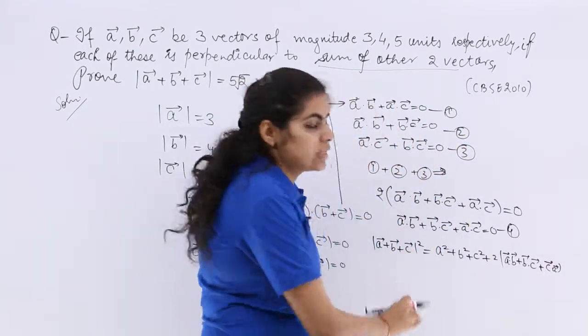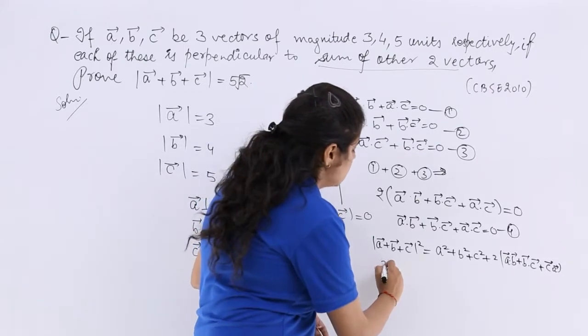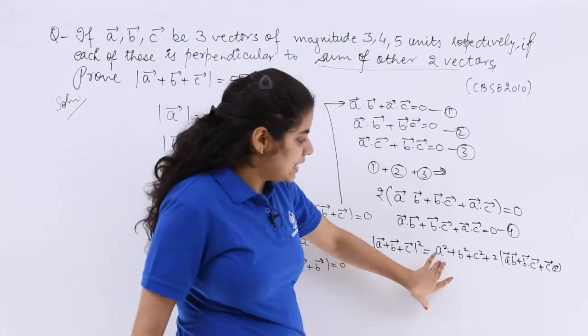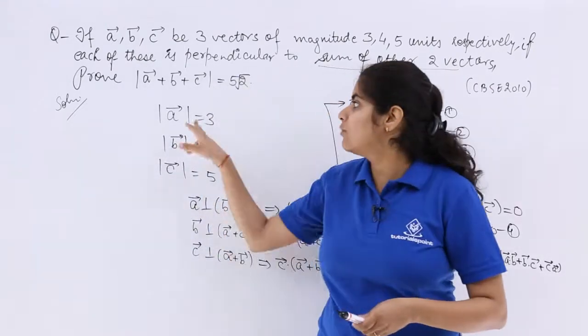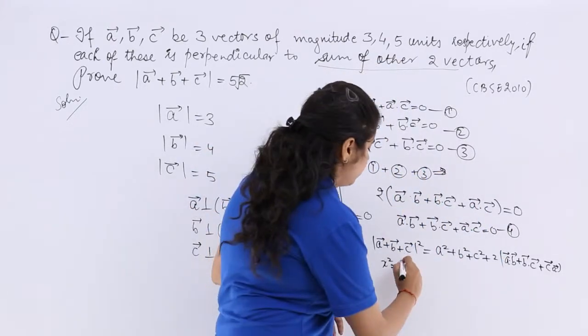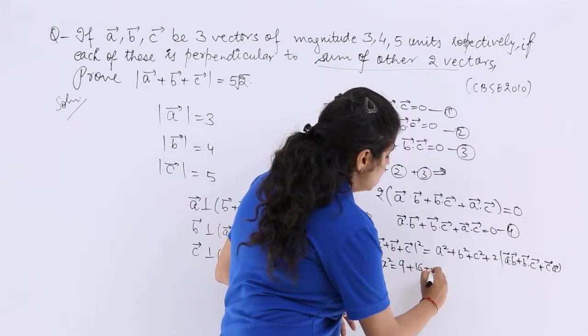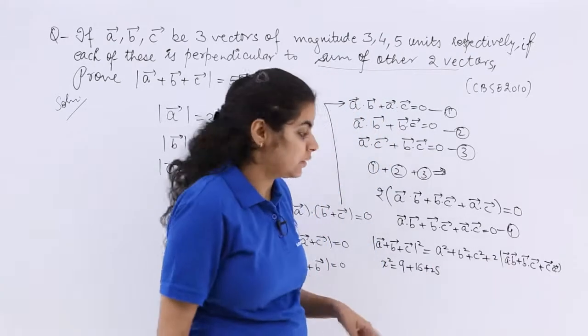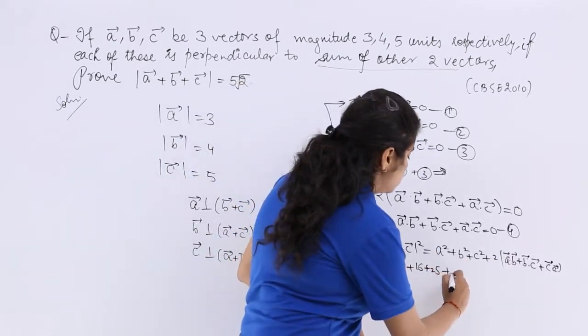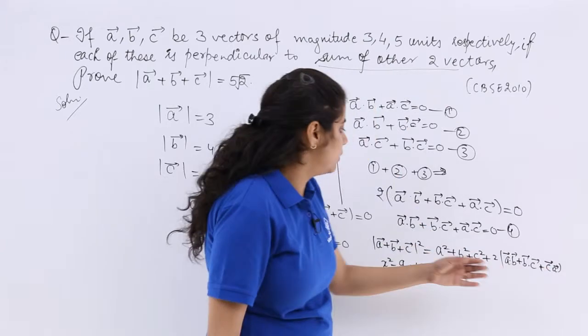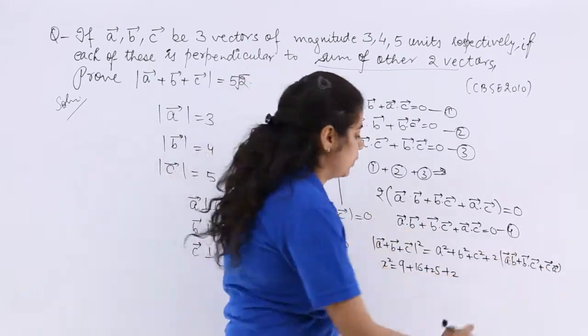Now this is required. Let me write it as X square probably. A square means mod of A square which is 9. B square is 16. C square is 25. Twice times this whole thing in bracket is actually 0 from equation number 4.